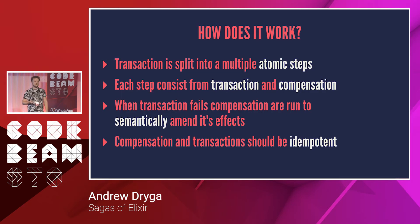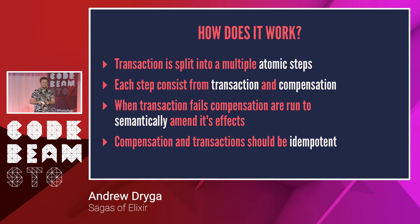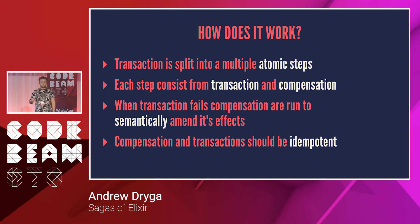The way it works is pretty simple: we split a transaction into multiple atomic steps. A real-world example is just a call to an external service — it's already a step, it's already atomic. Each step consists of a transaction and a compensation. When a transaction fails, the compensation runs to semantically undo its effects. By 'semantically' I mean some operations cannot be undone — for example, if you send an email, you can't delete it from the inbox; you send another one saying sorry.